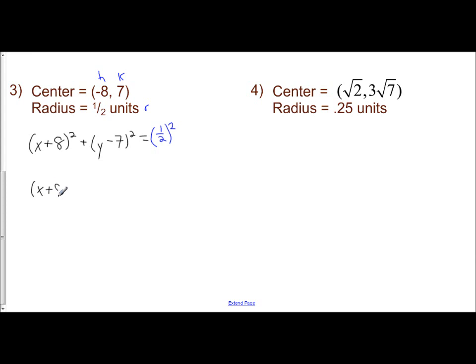So I write down the left side as is, x plus 8 squared, plus y minus 7 squared. Well, to square a fraction, you square the top, and you square the bottom. So 1 squared is 1, 2 squared is 4. So my final equation is x plus 8 squared, plus y minus 7 squared, equals 1 fourth.